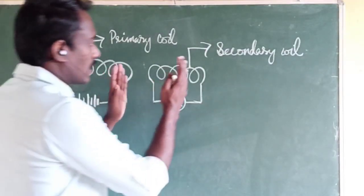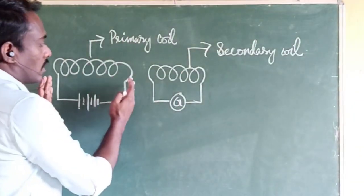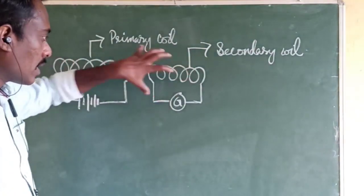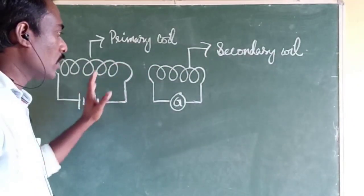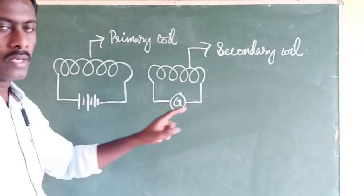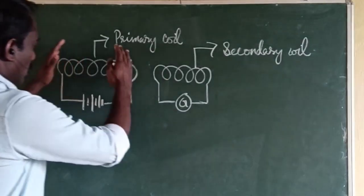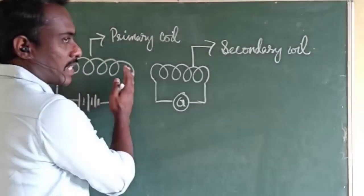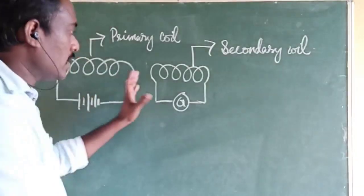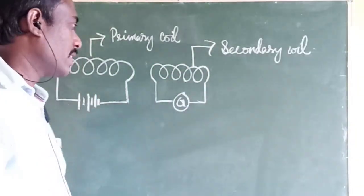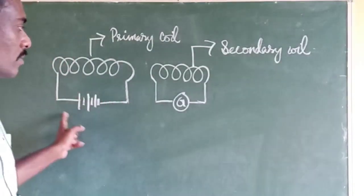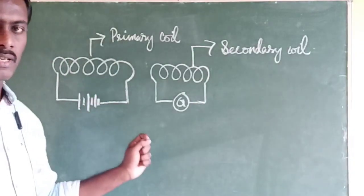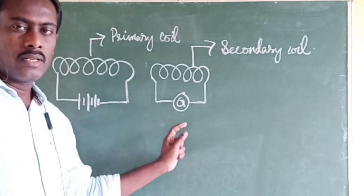When the secondary coil is fixed and the primary coil changes position, the primary coil is changing the magnetic field around it. When a coil is placed under a changing magnetic field, it can generate an electric current — this is called induced current. This phenomenon is called electromagnetic induction.